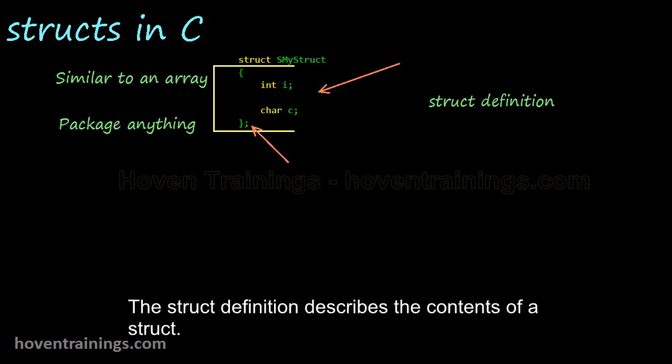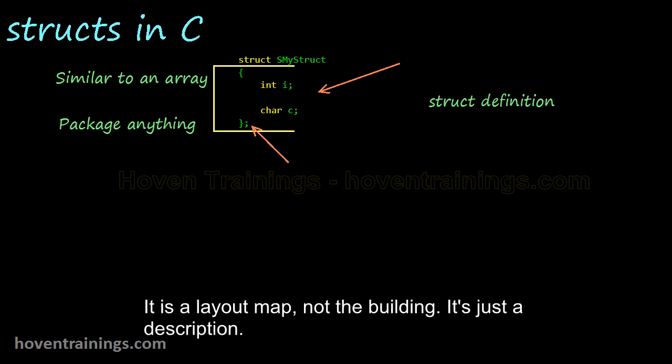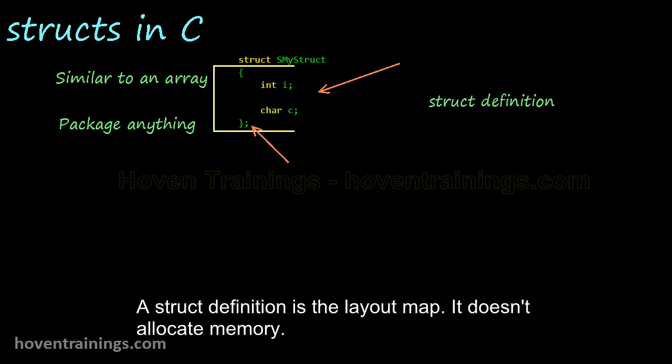A struct definition is always terminated with a semicolon. The struct definition describes the contents of a struct. It is a layout map, not the building. It's just a description. A struct definition is the layout map. It doesn't allocate memory.